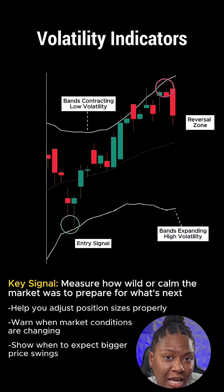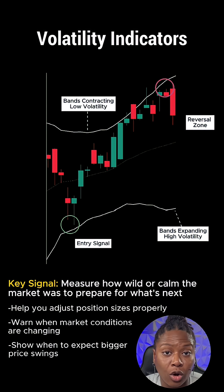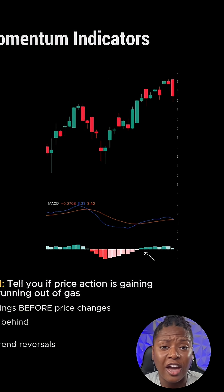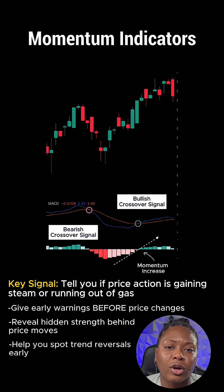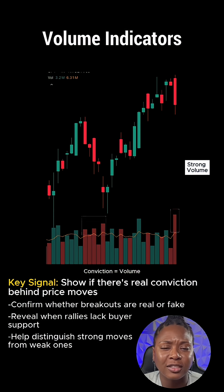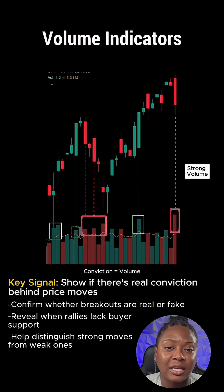Then you have volatility indicators, which are primarily lagging and measure how wildly or calmly the market is moving — this helps you adjust your strategy for what's potentially coming up. You have momentum indicators, which are leading indicators that tell you if the price action is building up steam or starting to run out of gas before the actual price change happens. And lastly, volume indicators — volume can be both leading and lagging — and they show you if there's true conviction behind the price moves.